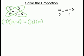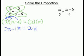On the right side we have 2 times x. On the left, because we have 3 times the quantity x minus 6, we must distribute that 3 to each term inside. So we are left with 3x minus 18 equals 2x.